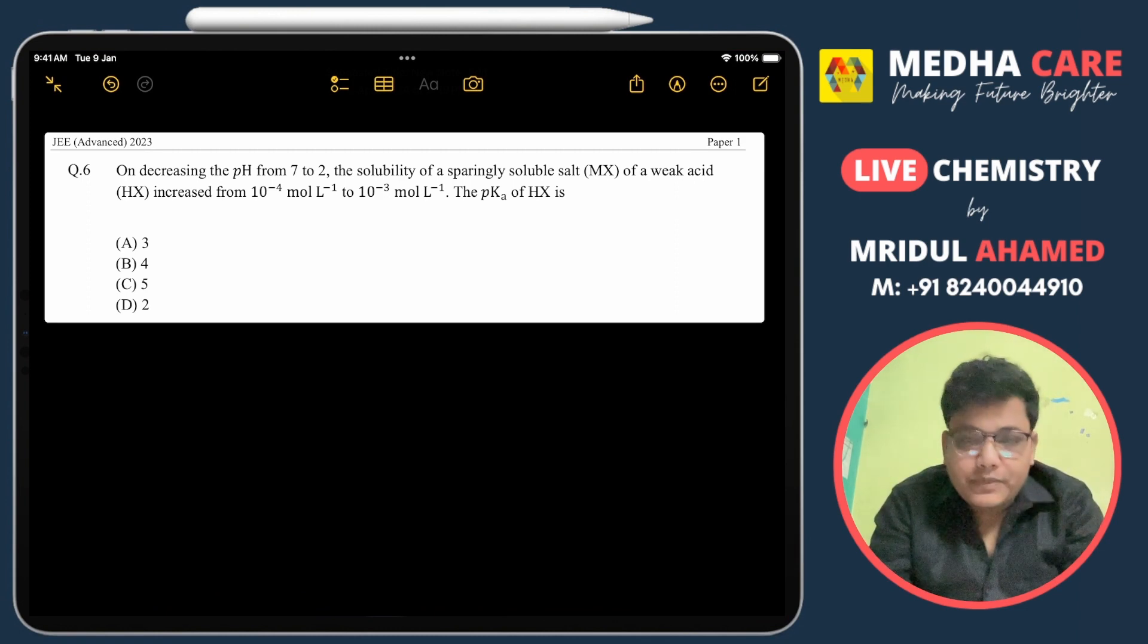In this question, on decreasing the pH from 7 to 2, the solubility of a sparingly soluble salt of a weak acid increased from 10^-4 to 10^-3 mole per liter. We have to find out the pKa of HX.